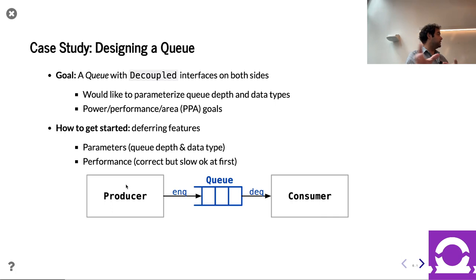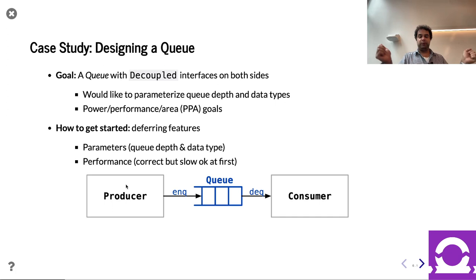I'm going to try to figure out the simplest thing we can do — fewer parameters, fewer possibilities. For performance, we'll tolerate a less efficient, less optimized design at first, and then start optimizing as we get going. We won't optimize on day one, but we'll get there.